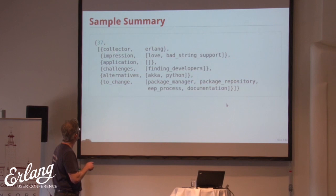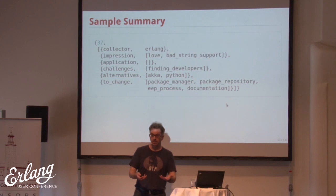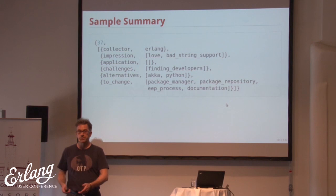When I took this response, I said: you talked about package management — so I tagged it 'package manager.' I store the data as Erlang terms. Package repository mentioned, EEP process. I normalized tags for consistency across the dataset. The summaries data is available on a GitHub project. This is the process of going from raw text to a summarized version in an Erlang term — with ID, collector, impression, challenges, alternatives, and changes fields.